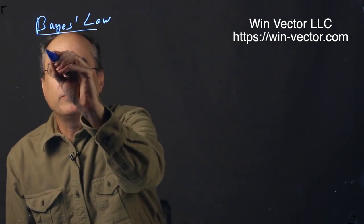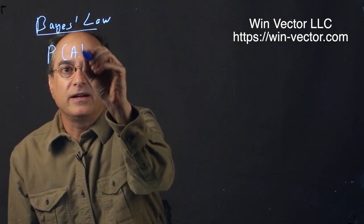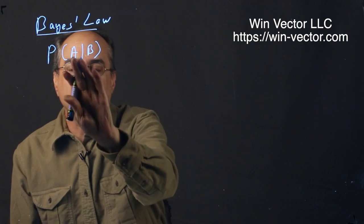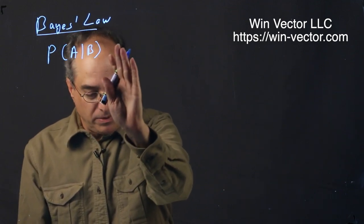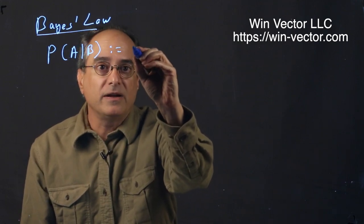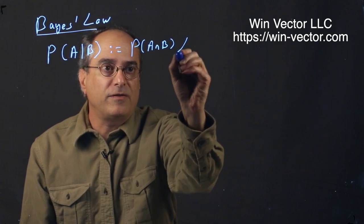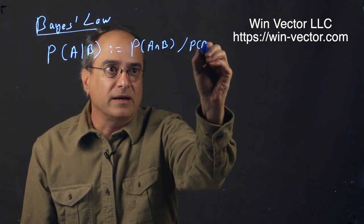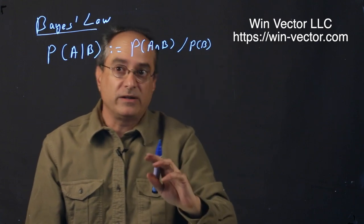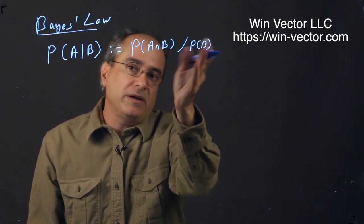P will be our symbol for probability calculations. This is the symbol probability of A given B. This is the probability of seeing A happen, knowing we're in a universe where B has already happened. And this is by definition the probability of seeing both A and B divided by the probability of B. We're going to assume that all of these quantities are always non-zero. So this is basically simulating a sub-universe where B is known to happen.